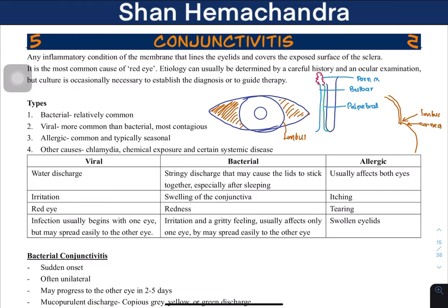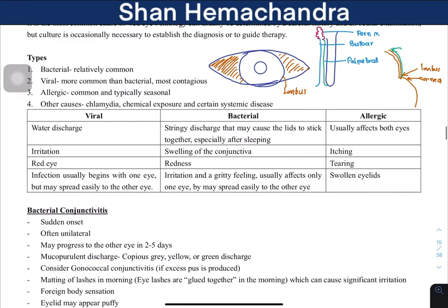The conjunctiva lines the surface and is a relatively avascular structure, meaning there are few blood vessels. Conjunctival blood vessels are present, but any blood vessel growing in the eye is a problem. Neovascularization — new blood vessel formation — is particularly problematic in the eye and is something we do not want.